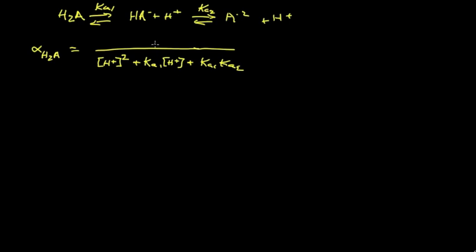The numerator is a term from the denominator, same as before. And it goes in this order. For the H2A species, it's H plus squared.